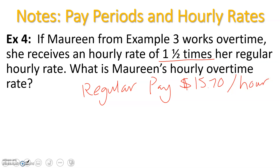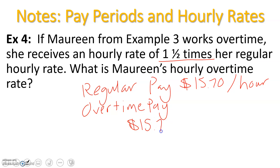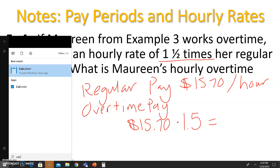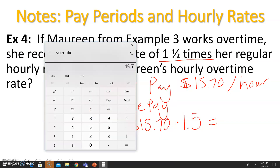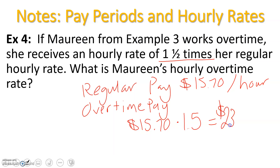Her overtime pay will be that regular pay times one and a half. So $15.70 multiplied by 1.5 — if she works overtime hours, she'll make $23.55 per hour, which is pretty good.